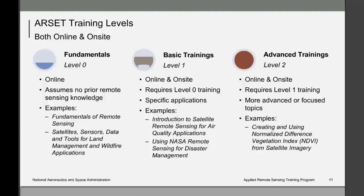ARCET offers training at several levels, where levels refer to the technical complexity of the material. Level 0 is for participants entirely new to remote sensing — it covers basics such as orbits and types of instruments available for monitoring the earth. Level 1 covers remote sensing platforms, sensors, data products, tools, and other resources for accessing and analyzing remote sensing data for a specific application, intended for those relatively new to remote sensing. Level 0 would be a prerequisite for Level 1.